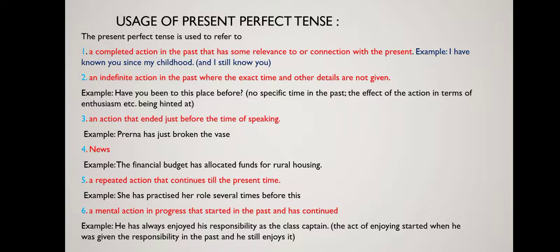Once again, I would like to remind you of the structure of present perfect tense. Present perfect tense is also used to refer to an indefinite action in the past when the exact time or other details are not given. For example: 'Have you been to this place before?' — no specific time in the past is mentioned, but the effect of the action is being hinted at.